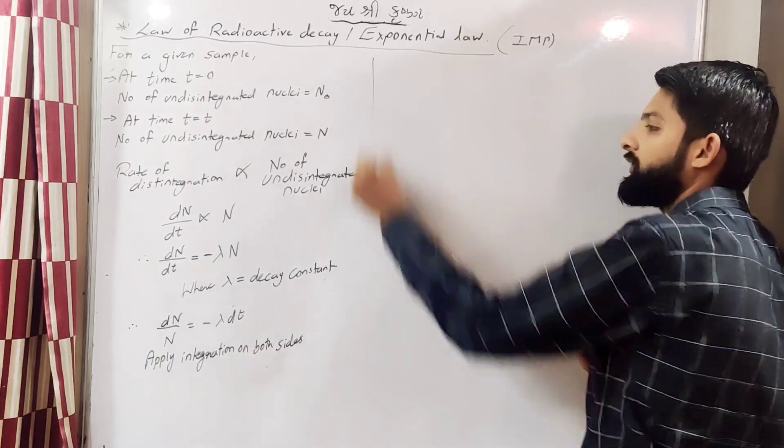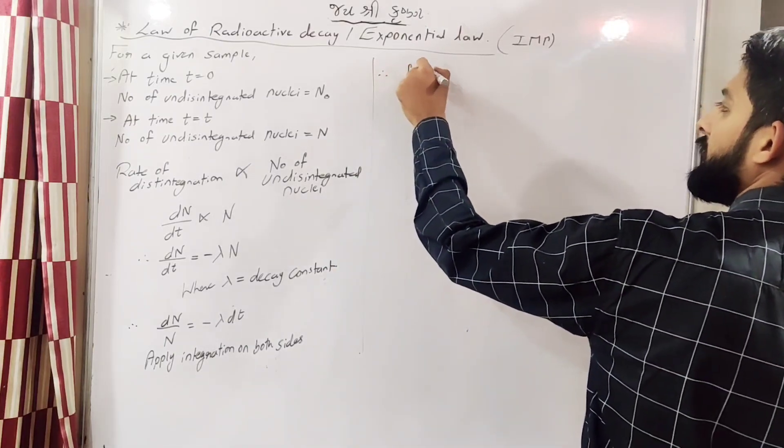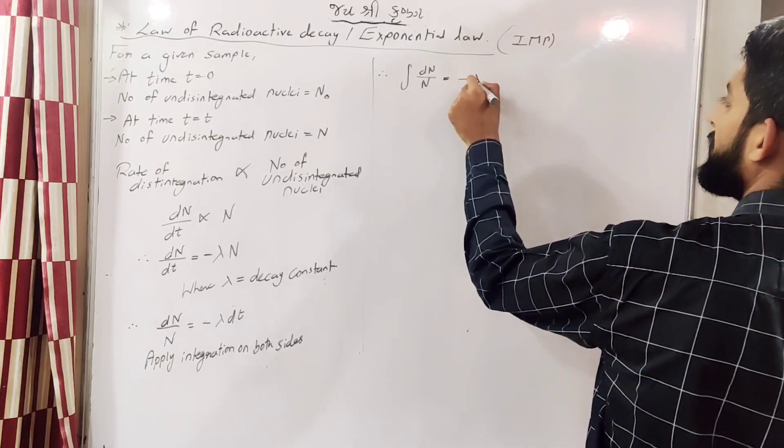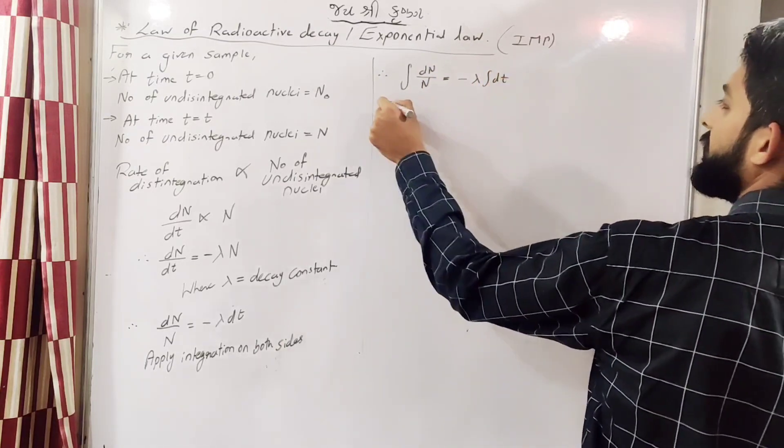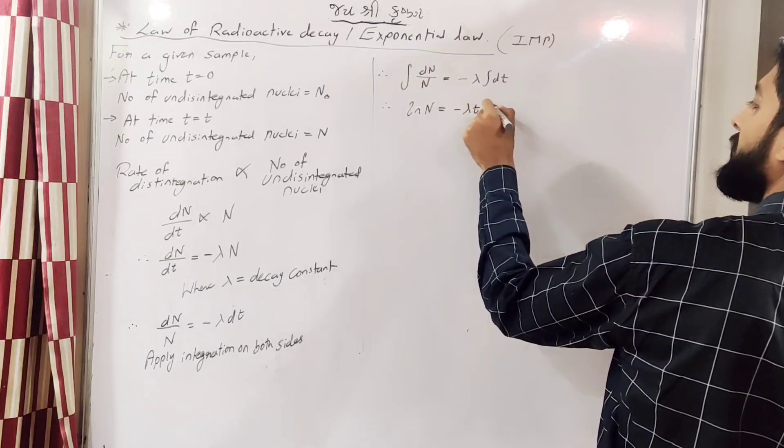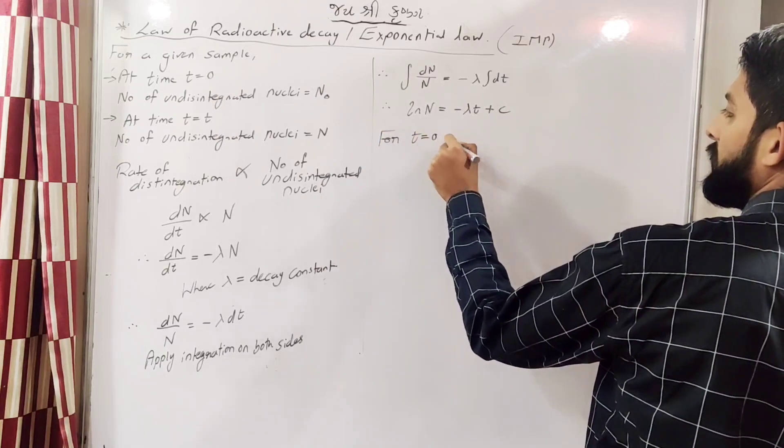Now apply integration on both sides. If we apply integration on both sides, dn upon n equals minus lambda dt. So we get ln n equals minus lambda t plus c.